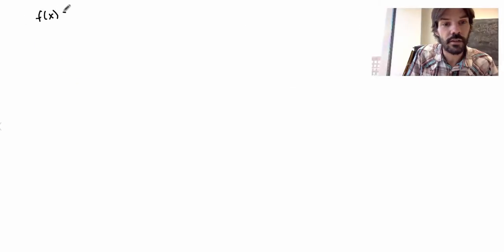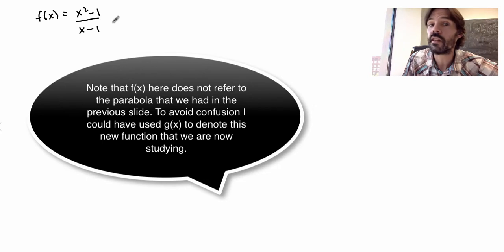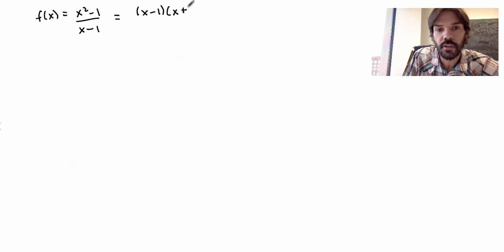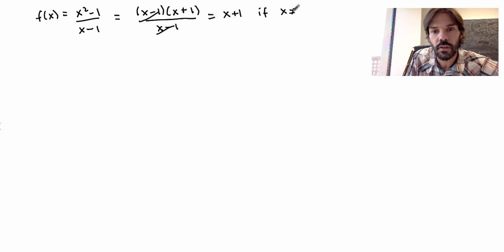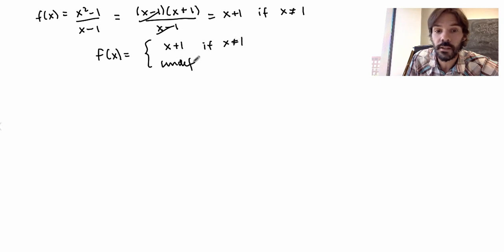Our function is f(x) = (x² − 1)/(x − 1). That looks complicated but it's not that bad. You can rewrite x² − 1 as (x − 1)(x + 1). As long as x is not equal to 1, you can cancel those two terms and get just x + 1. So the function f(x) equals x + 1 if x ≠ 1, and it's undefined if x = 1 because that gives 0/0, which is not well defined.